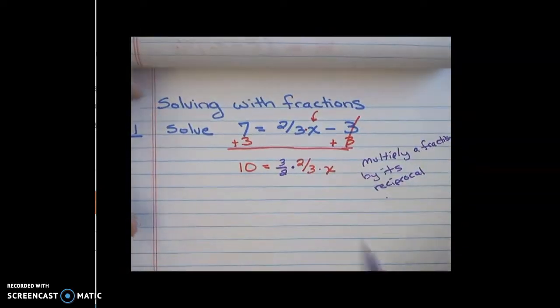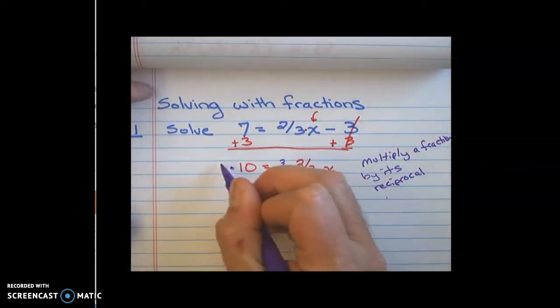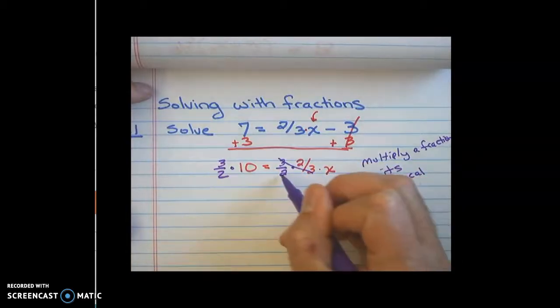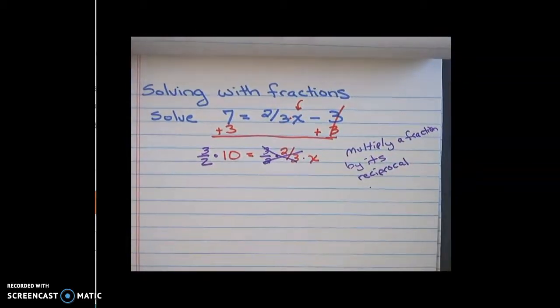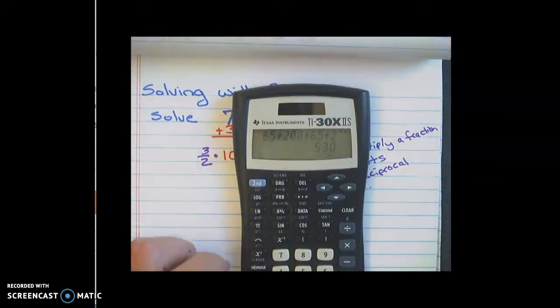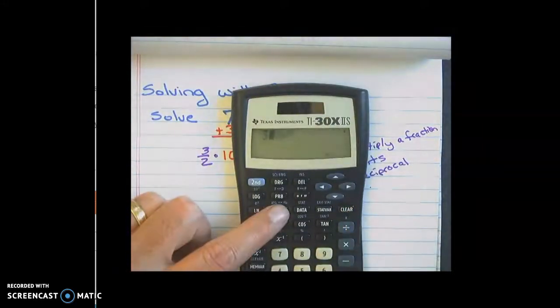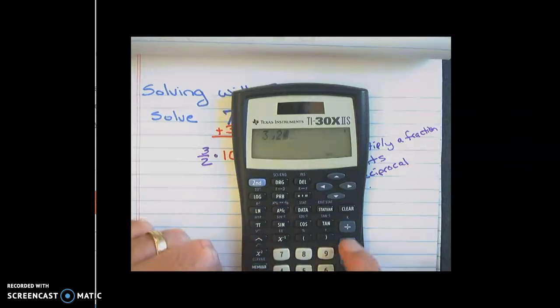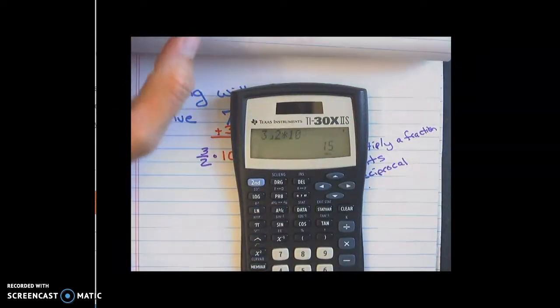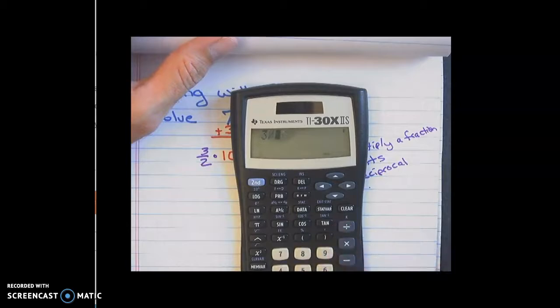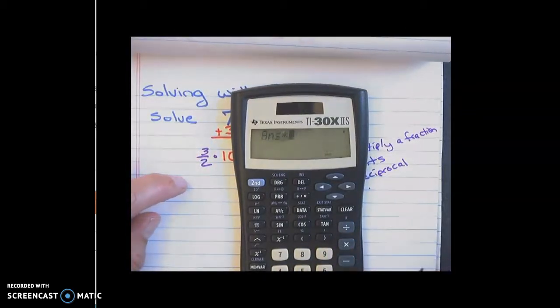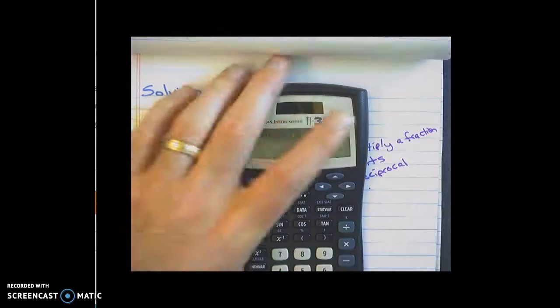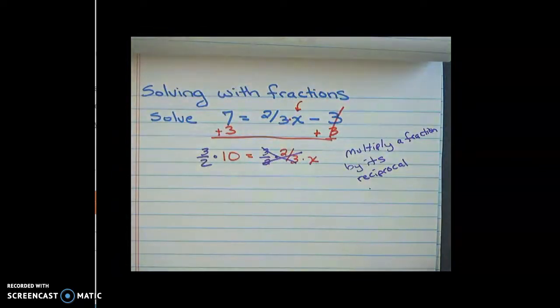And so in this one, if I do that to one side, I have to do it to the other. On this side, the 3/2 and the 2/3 cancel out. And on the left-hand side, I have 3/2 times 10. Now, if you have a calculator like this, you can do fractions a couple different ways. You can do 3abc2 times 10. If you don't have a calculator like this, you could do 3 divided by 2. So the fraction, you could do 3 divided by 2, get the decimal, and then times it by 10. That would work.